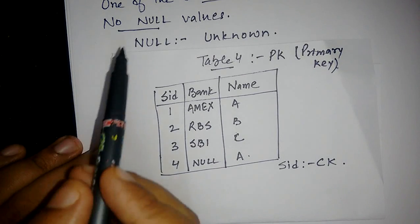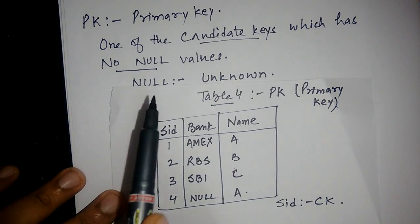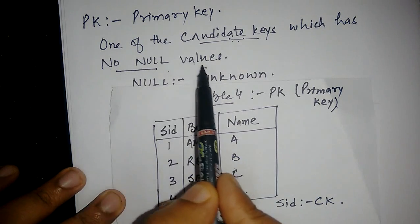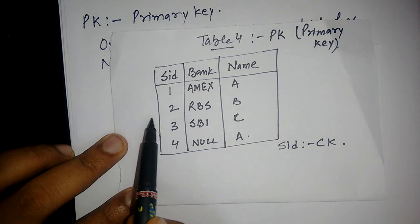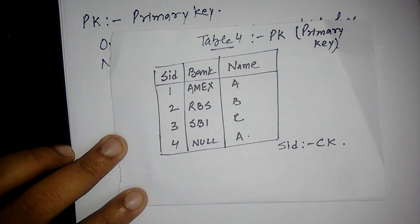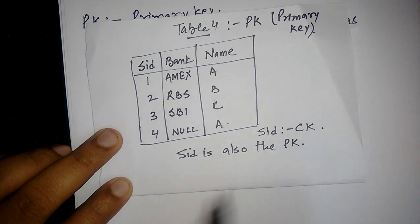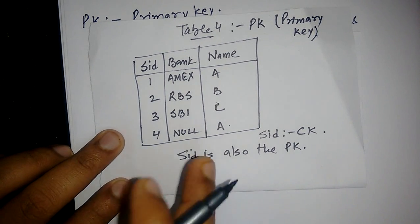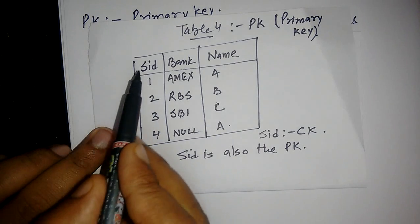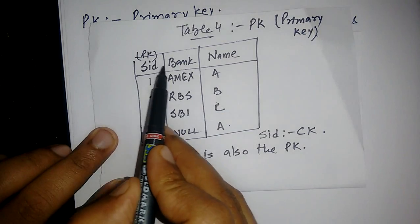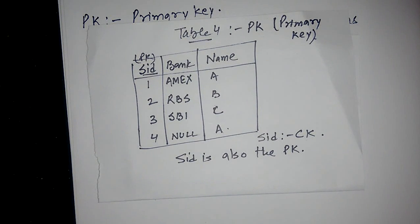Moving forward, since SID is a candidate key, can we term it as primary key? The candidate key which has no null value is a primary key. According to this table, there are no entries in SID having null. Therefore, SID is also the primary key for this table, since it is the candidate key and it does not have any null values. To differentiate SID as our primary key from the rest of the attributes, I am underlining SID. We will be following this practice in future also.